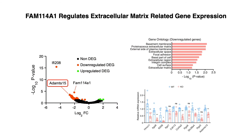Finally, bulk RNA-seq in wild-type and FAN141 knockout cardiac fibroblasts confirms that FAN141 influences ECM gene expression, a crucial feature of the cardiac fibrosis process.